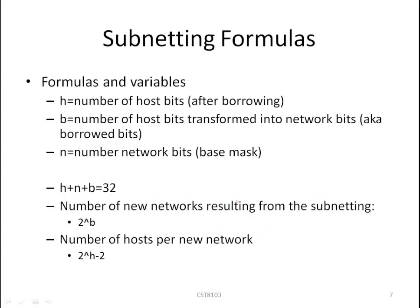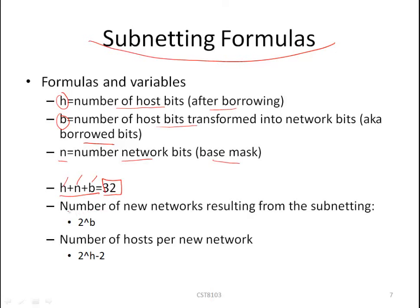Here's a quick summary slide of the formulas and variables. H is the number of host bits after borrowing. B is the number of host bits transformed into network bits, i.e., the borrowed bits. N is the number of network bits from our base mask. Remember: H plus N plus B must always equal 32. The number of new networks resulting from subnetting is 2 to the B. The number of hosts per new network is 2 to the H minus 2. If you need further information or examples, go back to the appropriate mini lecture.